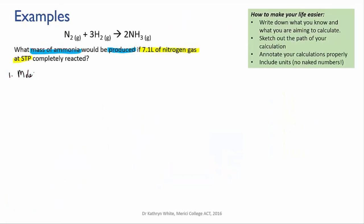First, convert the volume of the nitrogen to moles. We know the volume is 7.1 liters and the molar volume is 22.4 liters per mole. So we line those up and divide by the molar volume. Remember, it's the same as multiplying by the inverse. The liters cancel out and that gives us 0.3170 moles of nitrogen gas.